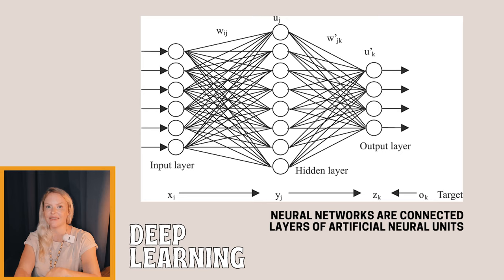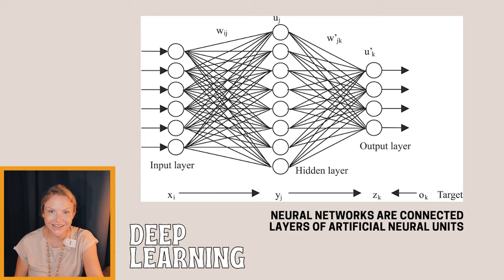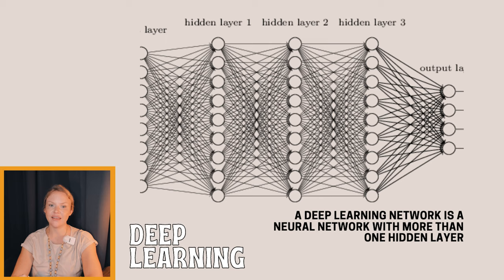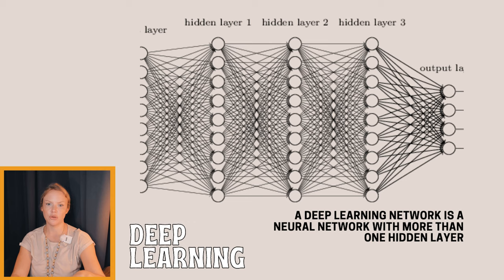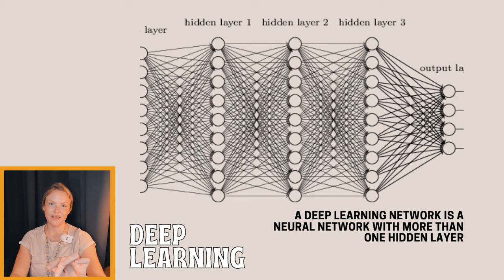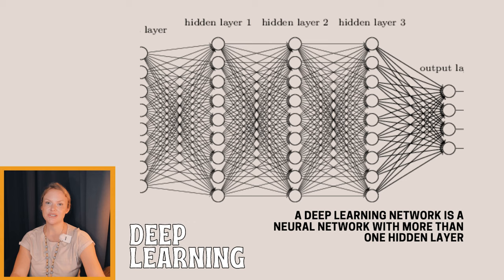Deep learning is a machine learning method that uses hierarchical neural networks to learn from data in an iterative and adaptive manner. It's ideal for learning patterns from unlabeled and unstructured data, and it's essentially the same concept as a neural network except that deep learning algorithms have two or more hidden layers. The more data you give a deep learning model, the better it performs — which is not true for standard machine learning models. Because deep learning requires so much data, it is extremely computationally expensive, requiring far more computing resources to generate results.